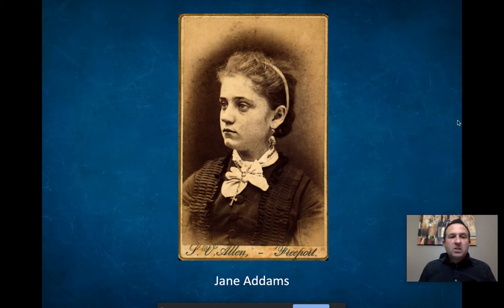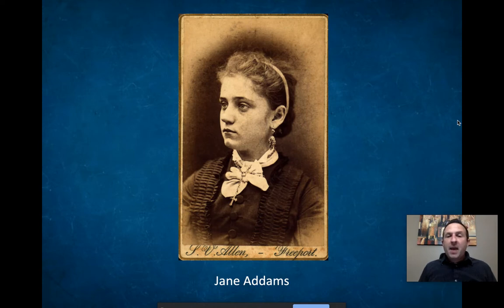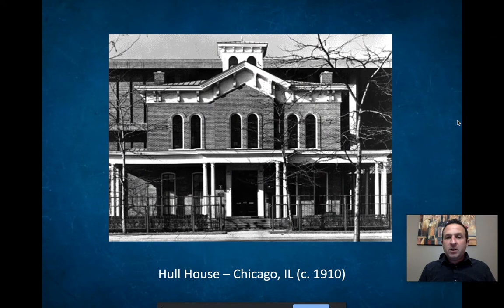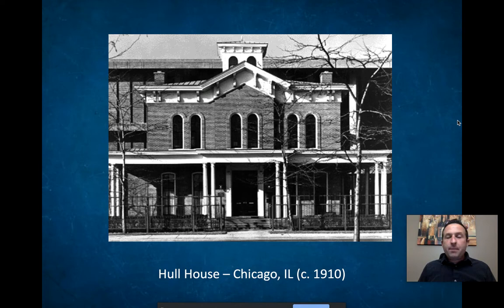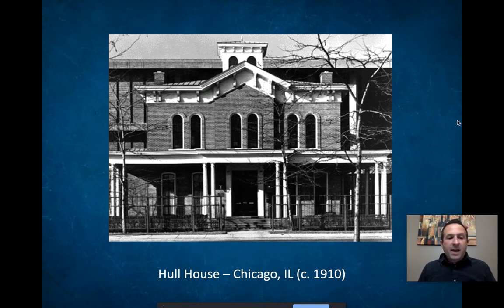In Chicago, Jane Addams went to one of the poorest neighborhoods and renovated a place called Hull House. It used to be the governor's mansion, dilapidated and no longer used. They bought it and fixed it up back in the 1880s. It was a prominent Chicago mansion owned by Charles Hull — it became known as Hull House. They raised money, volunteered, fixed it up, and opened Hull House as a place that poor members of the community could come.